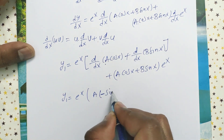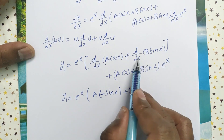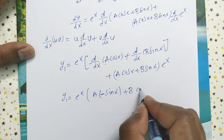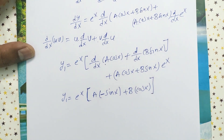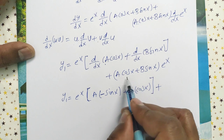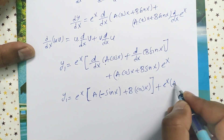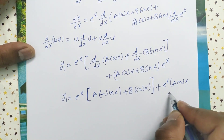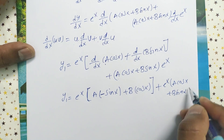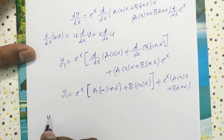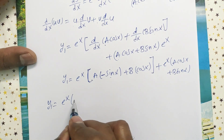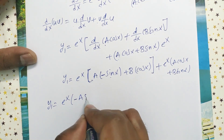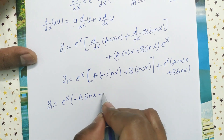Now d/dx(cos x) = -sin x and d/dx(sin x) = cos x. So y₁ = eˣ(-a sin x + b cos x) plus eˣ(a cos x + b sin x). This gives y₁ = eˣ(-a sin x + b cos x) + y.